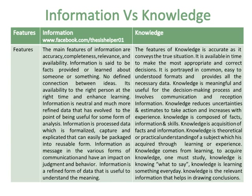Information is neutral and much more refined data that has evolved to the point of being useful for some form of analysis. Information is processed data which is formalized, captured and explicated, and can easily be packaged into reusable form. Information is a message in various forms of communication and has an impact on judgment and behavior. Information is a refined form of data useful to understand meaning, while knowledge is accurate as it conveys the true situation and is available in time to make the most appropriate and correct decisions.